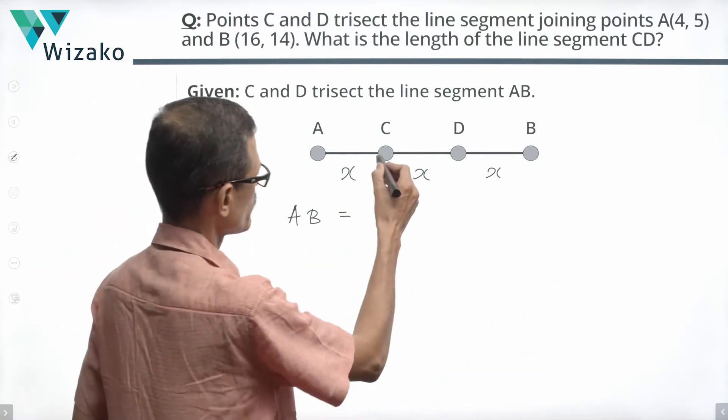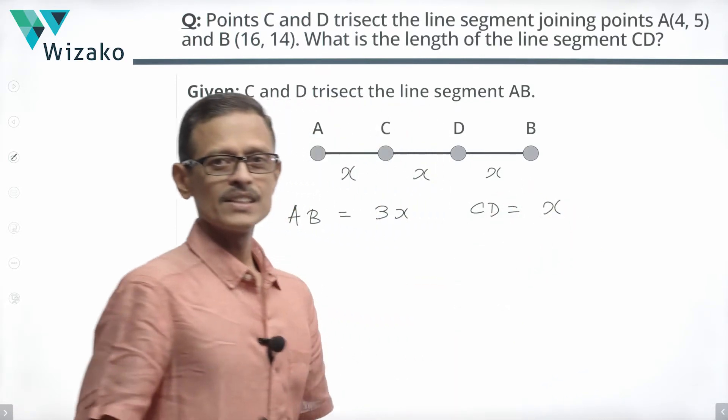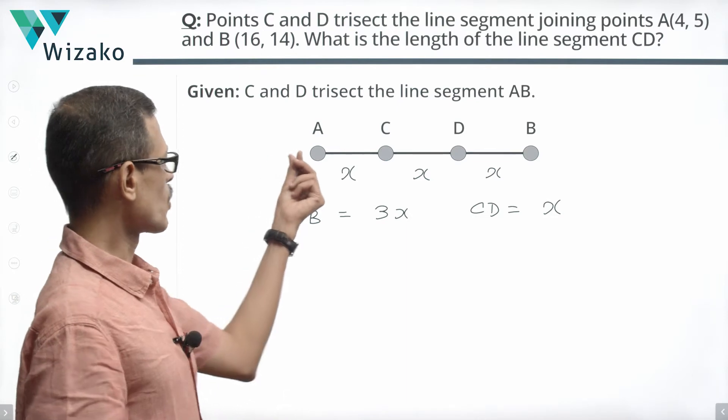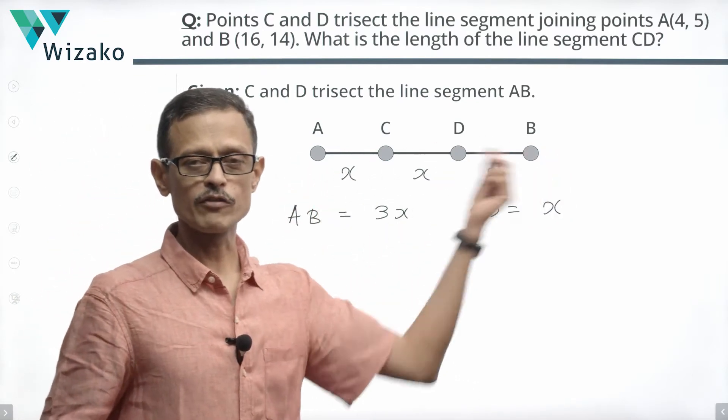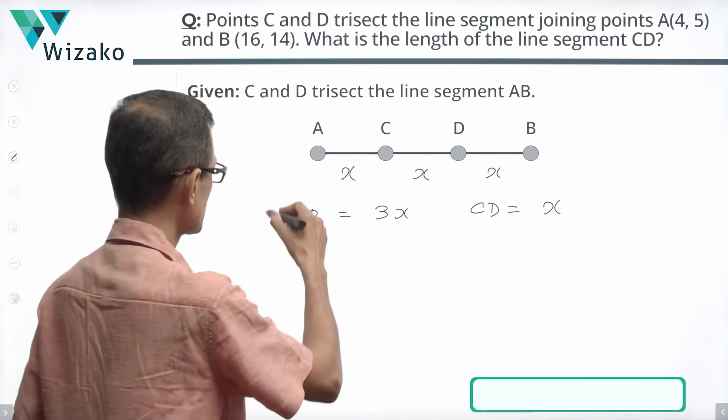What do we have to find out? We will have to find out CD. CD is equal to X units. What information do we have? We have information about the coordinates of A and coordinates of point B which means that we will be able to find out the length of the line segment AB.